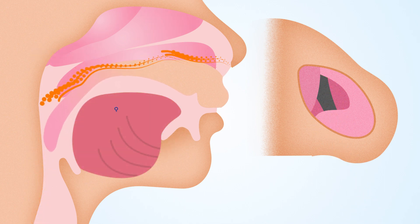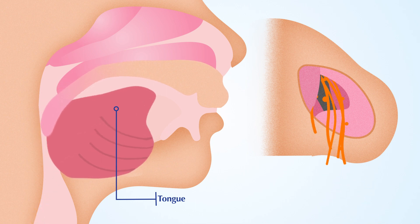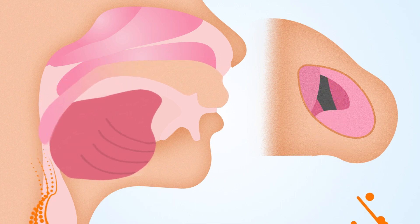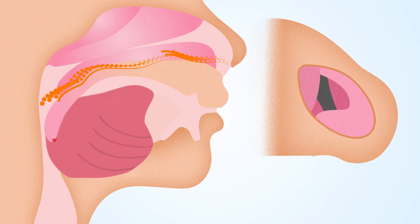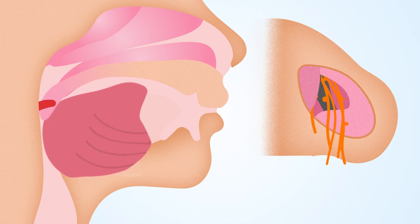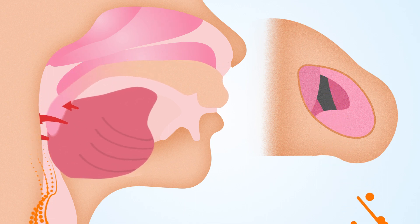The suction current also pulls the tongue back into the airway. These forces create sleep apnea as the negative pressure pulls the tongue back, obstructing the airway.